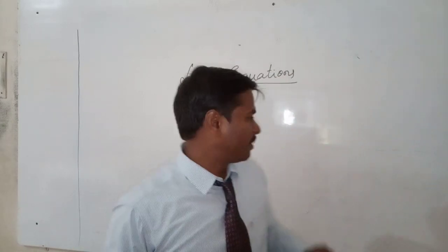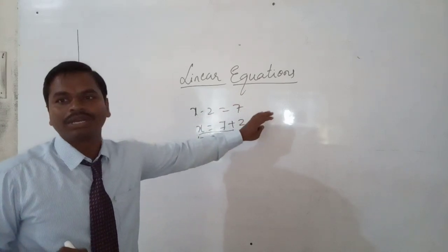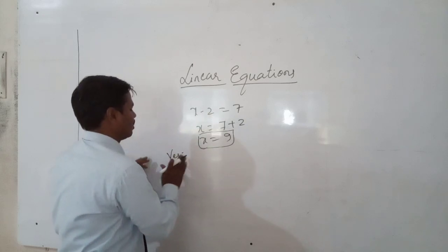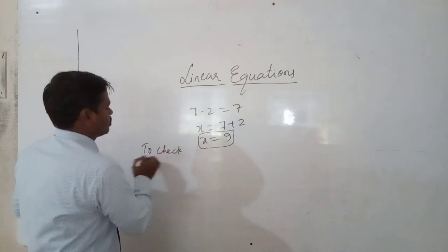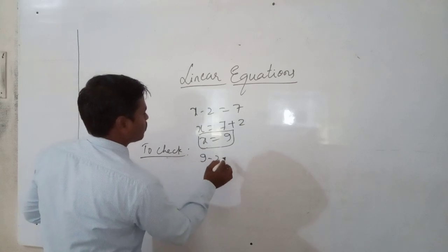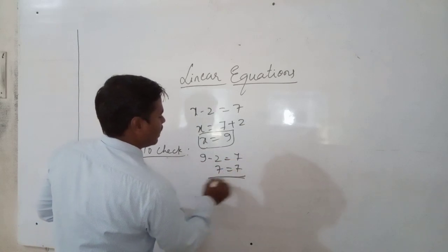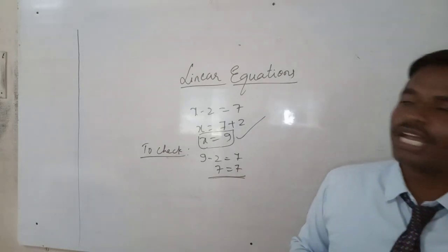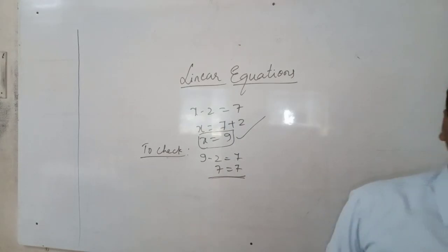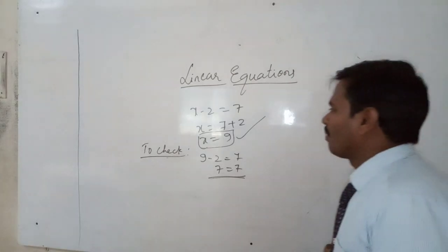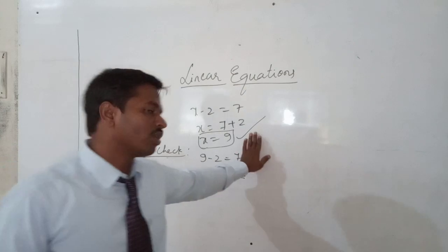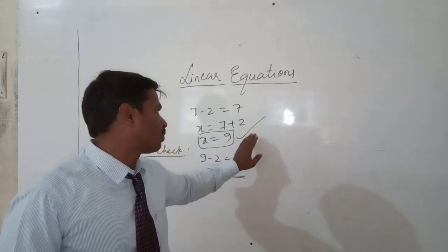How to verify this? We substitute this value and check whether it satisfies the equation. x minus 2 means 9 minus 2, which equals 7. And 7 equals 7 — if RHS equals LHS, then our answer x equal to 9 is correct. This is the way to solve a linear equation and check whether the answer is correct or not.